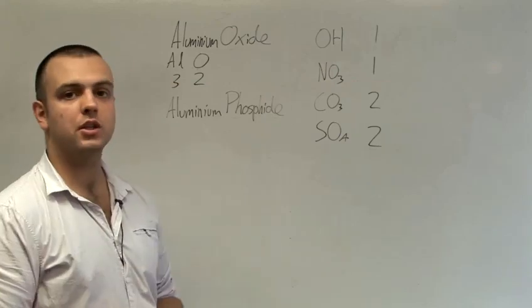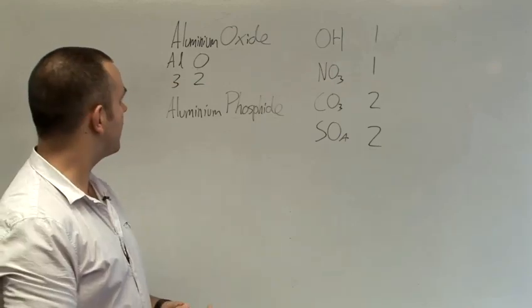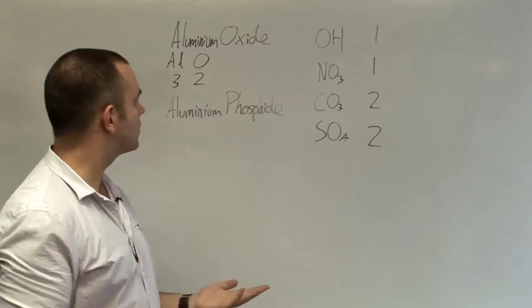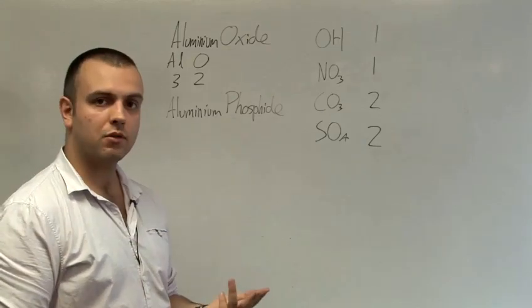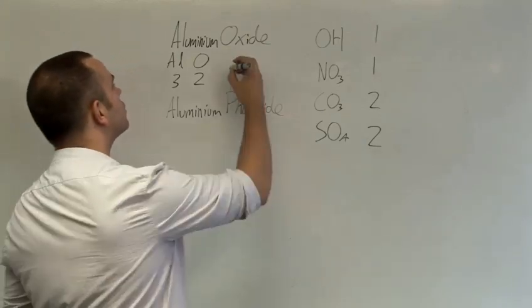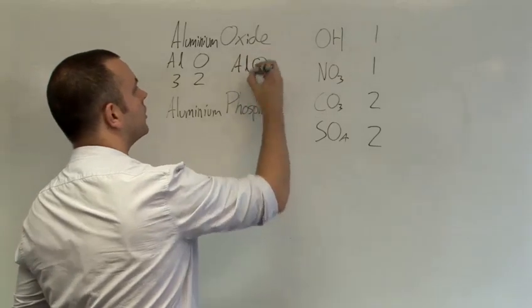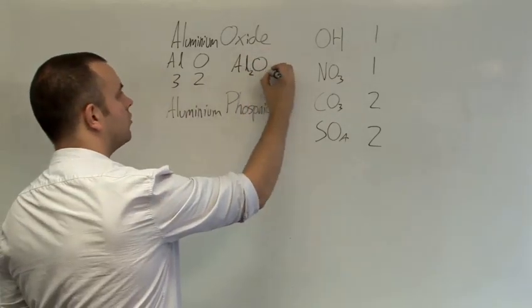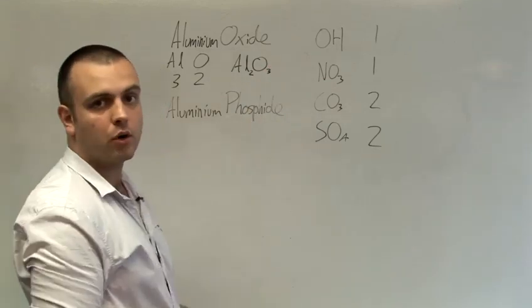This means if they make a molecule which is electrically neutral, you're going to have to have 3 oxygens to give a charge of minus 6, combining with 2 aluminiums for a charge of plus 6. So when we write aluminium oxide, we simply swap these numbers around to give Al2O3 for aluminium oxide.